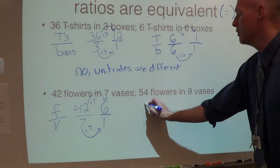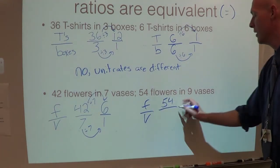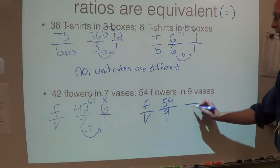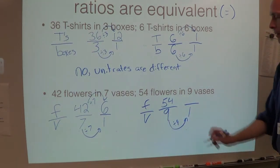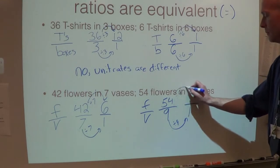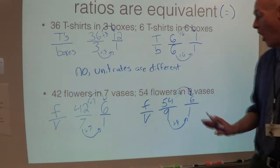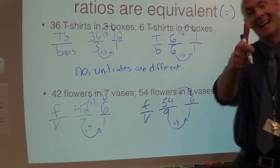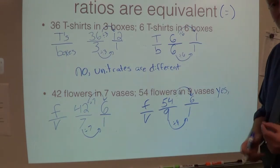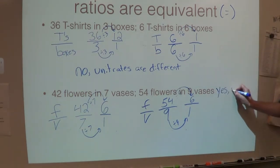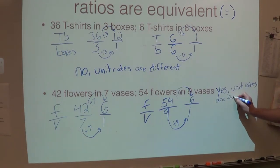Let's try the second one. Flowers over vases — I have 54 flowers in nine vases. Let's check that unit rate, so we're going to put it over one. We're going to divide by nine. Nine divided by nine is one, so we divide the top by nine. 54 divided by nine is six. So in this case, are the unit rates the same? Six to one and six to one — yes, they are. So in this case, are they equivalent? Yes. And if it says explain, just say unit rates are the same.